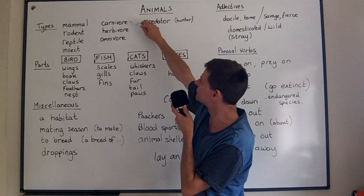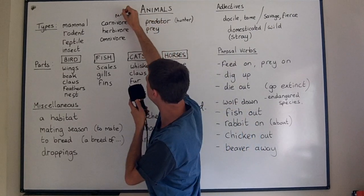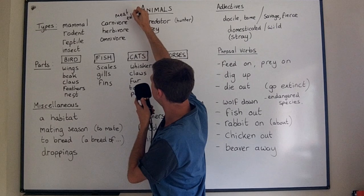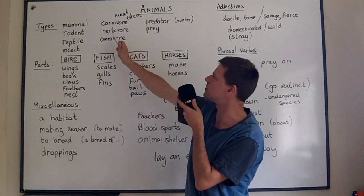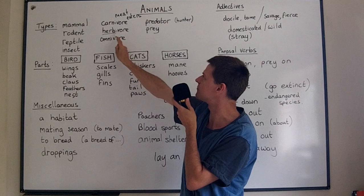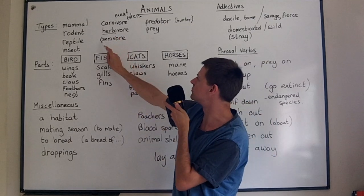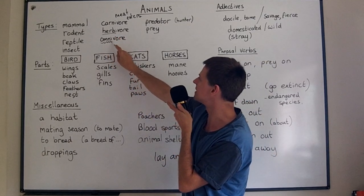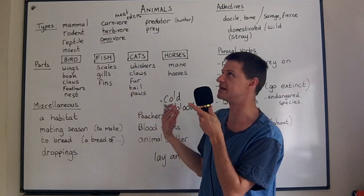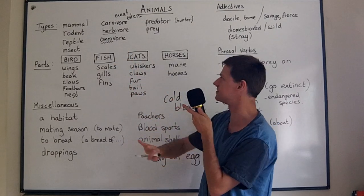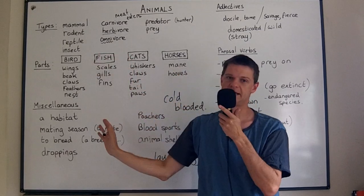You can split animals into carnivores, which are meat eaters, herbivores, which only eat grass and vegetation — that's why they've got the word 'herb' there — and omnivores. 'Omni' means everything or all. If you speak about God you might say he's omniscient, which means he knows about everything.